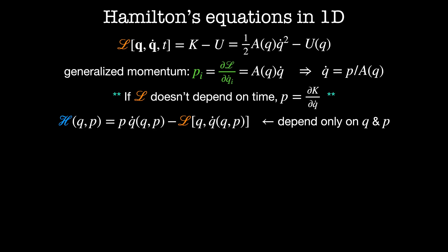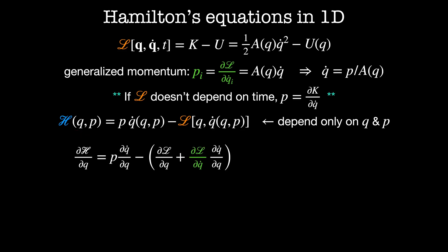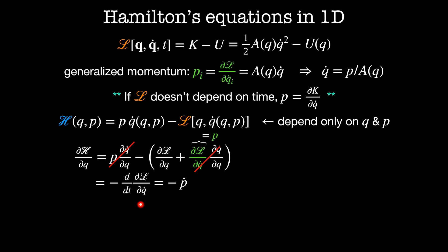To derive equations of motion for this system, we'll look at how the Hamiltonian changes as we vary both Q and P. First, we'll look at dH by dQ. This is equal to P times dQ dot by dQ minus the derivative of the Lagrangian with respect to Q, plus dL by dQ dot times dQ dot by dQ. We'll use the definition of generalized momentum along with the Lagrangian equations to simplify this. The term dL by dQ dot is equal to the generalized momentum, and from the Euler-Lagrange equation, the remaining term is equal to D by DT of dL by dQ dot, which is equal to minus the rate of change of the generalized momentum.